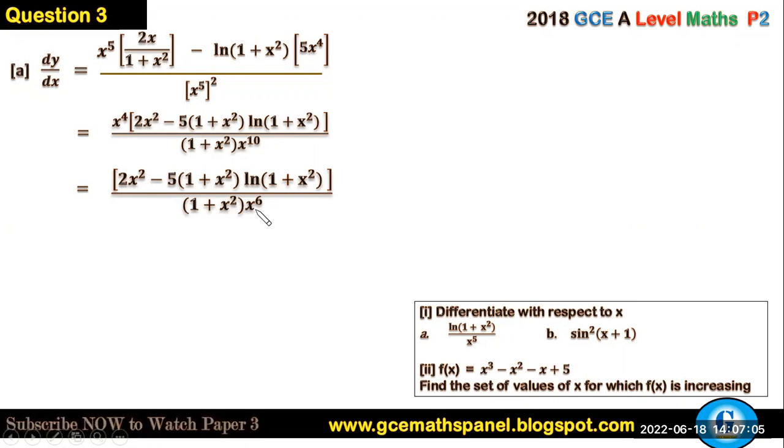So this is the derivative of this function. Now the b part is to find the derivative of sin²(x + 1). So the first thing to know here is that sin²(x + 1) is the same as [sin(x + 1)]².